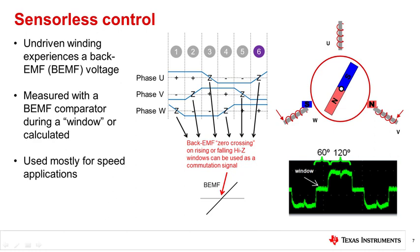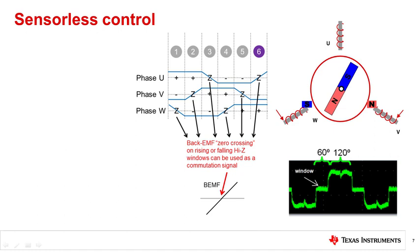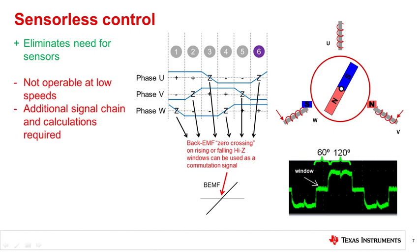Typically, sensorless control is used for speed applications since the motor will generate enough back EMF when it is spinning at a constant speed. The main advantage to sensorless control is saving board space and mechanical complexity by eliminating the need for sensors. However, it is not operable at low speeds because back EMF generated is too small to measure.